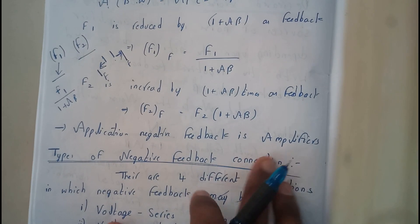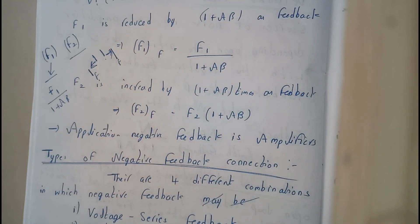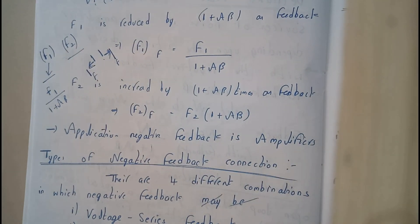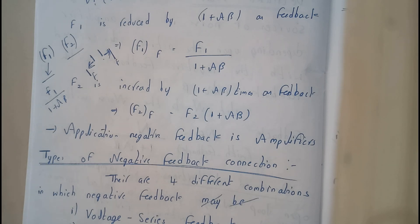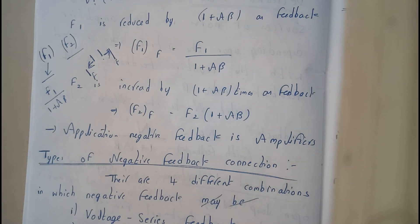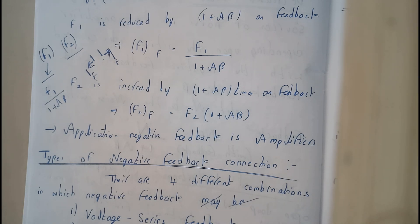The basic application of negative feedback is with amplifiers — most amplifiers are designed using negative feedback. So now I hope everyone has a clear idea on this. There are 4 different types of connections in negative feedback, and in the next class we will be going through all those 4 types in detail. Thank you, thanks for watching!